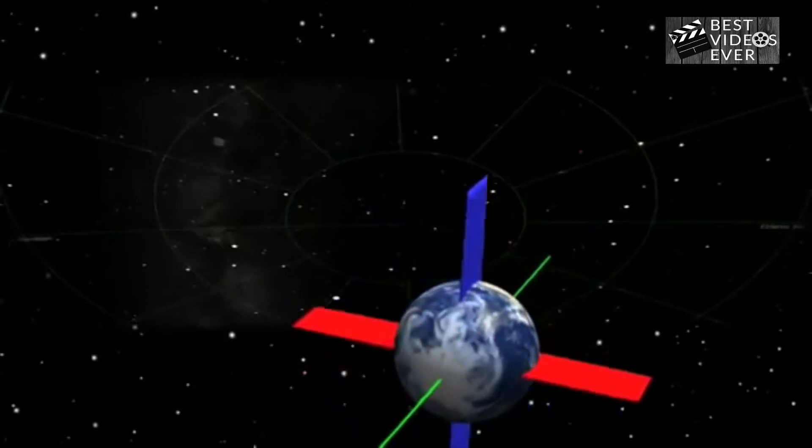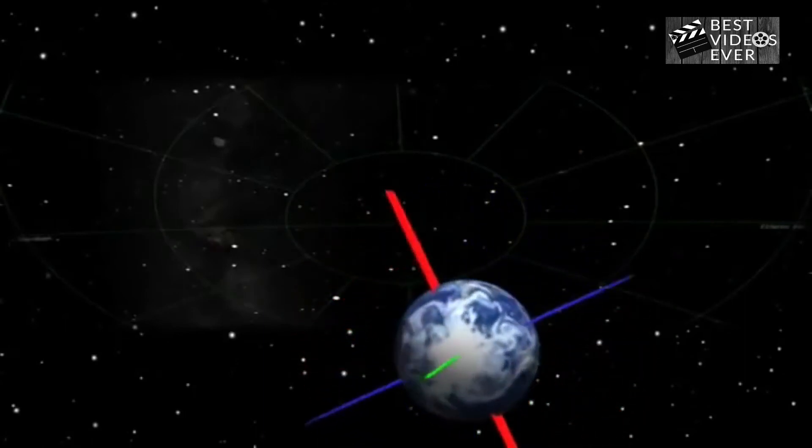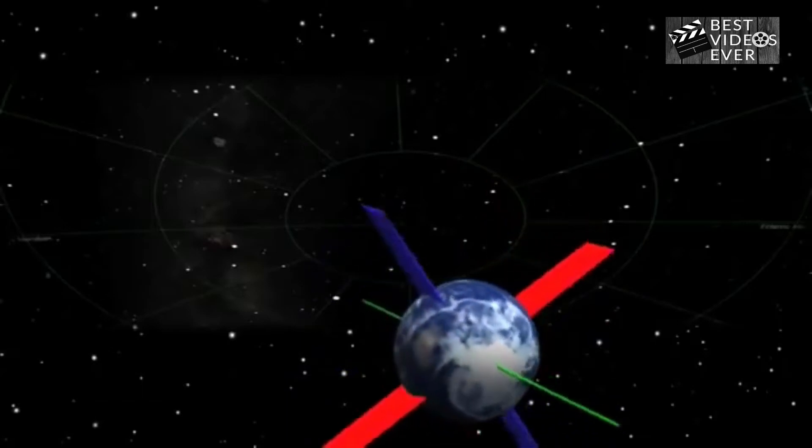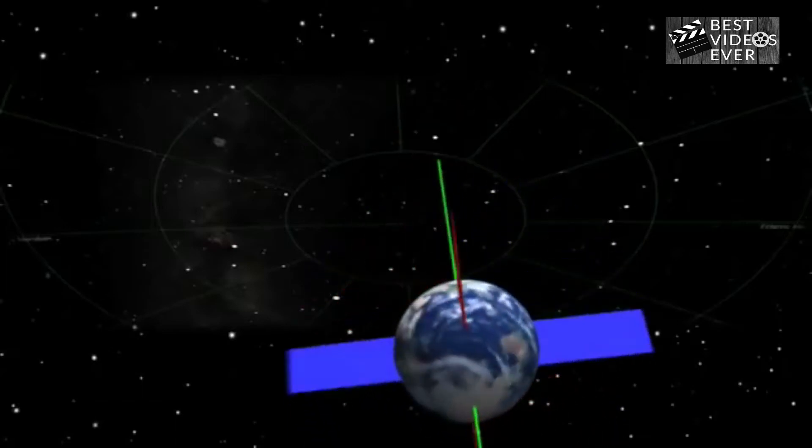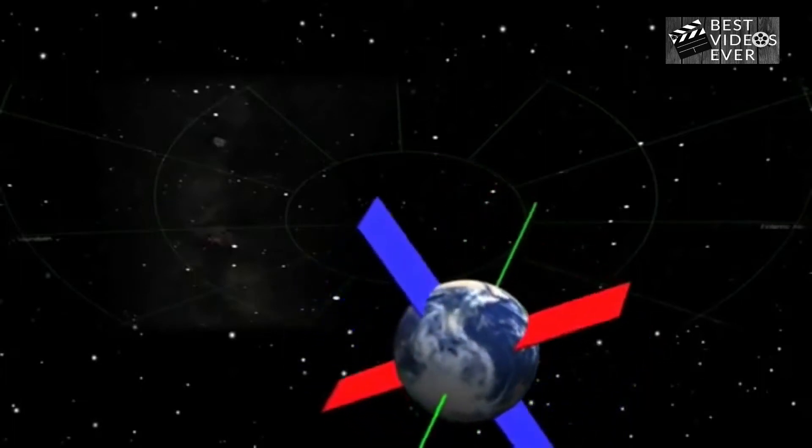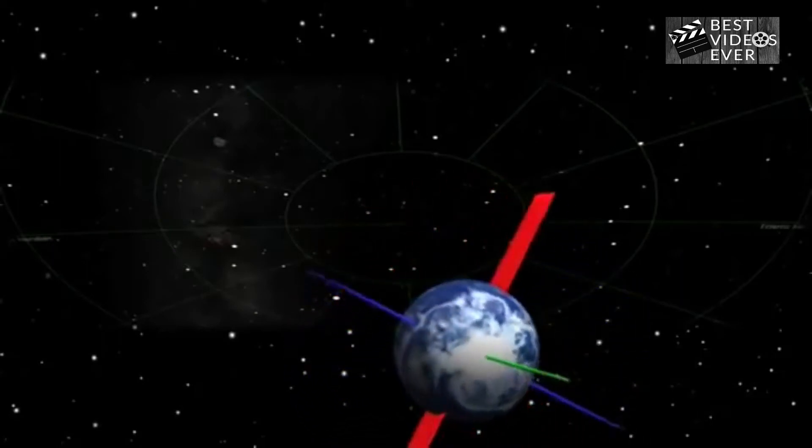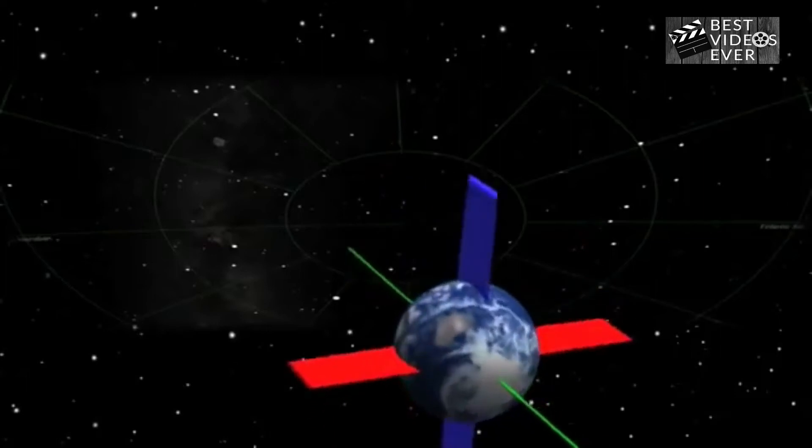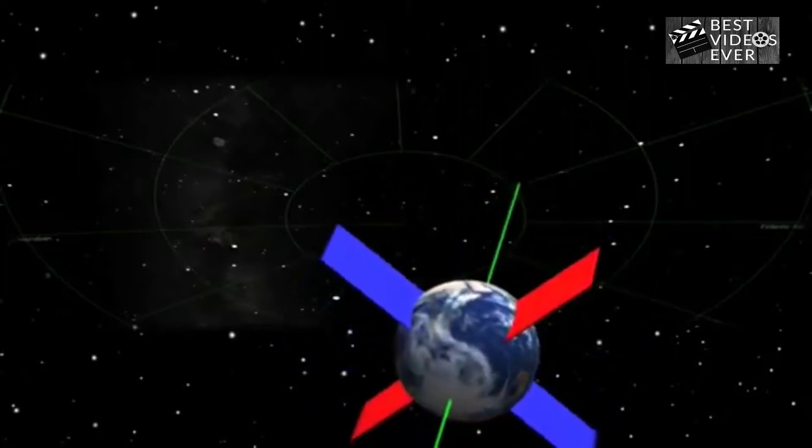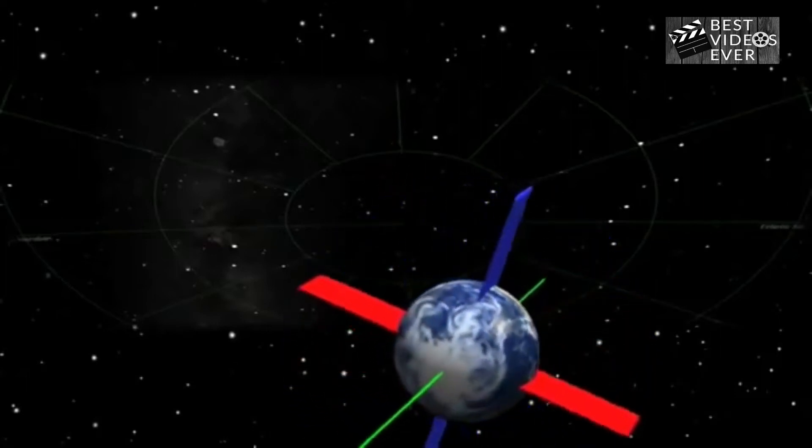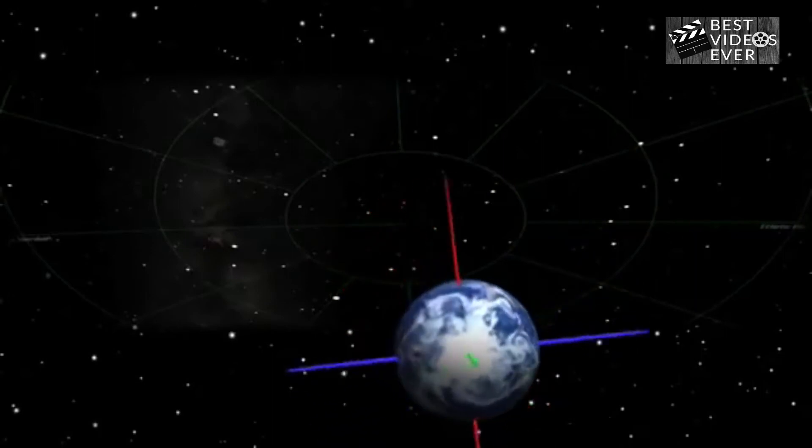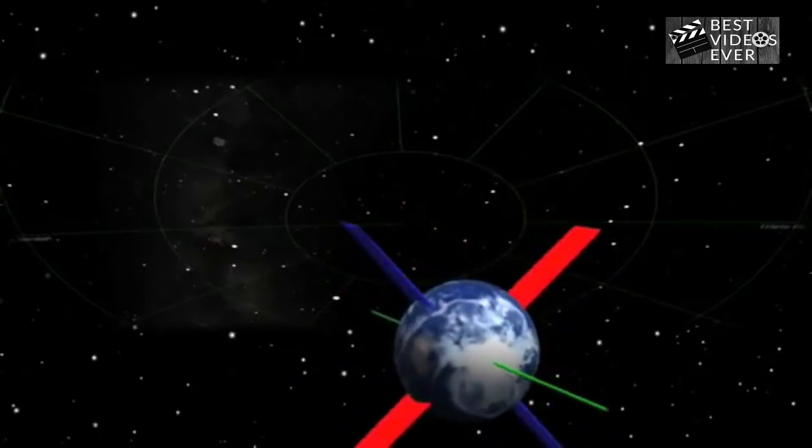One result of this is that the North Star changes over time. Right now, the Earth's axis points towards Polaris. 5,000 years ago, the axis pointed to a star in the constellation Draco. And 12,000 years ago, the brilliant star Vega was the Polestar. And because of the 26,000-year cycle, Vega will be the Polestar again in 14,000 years.